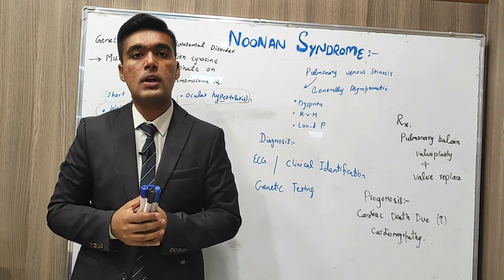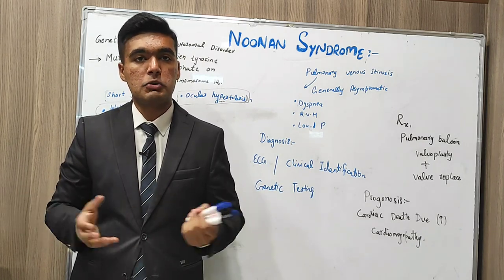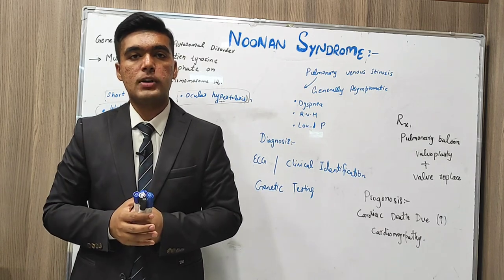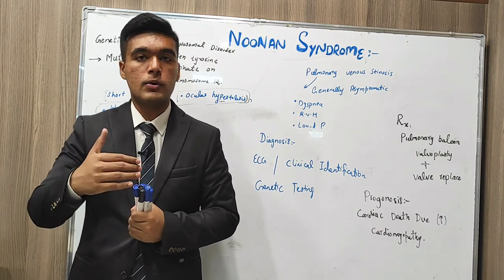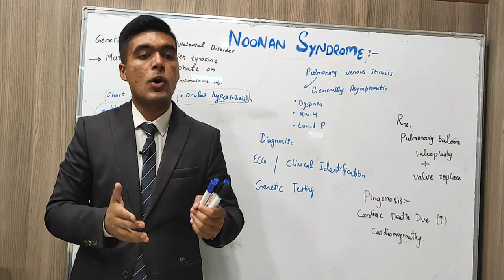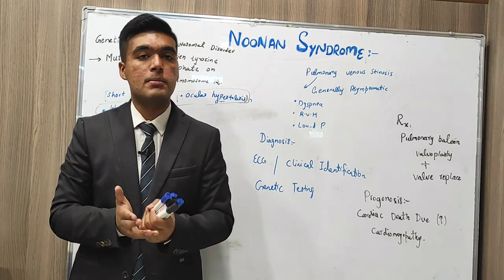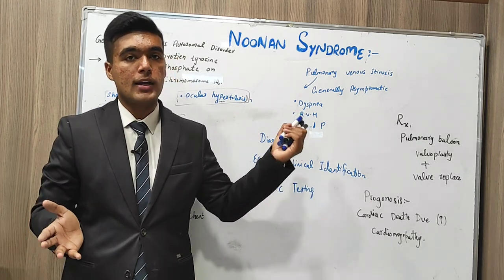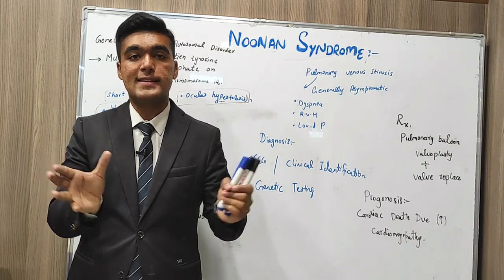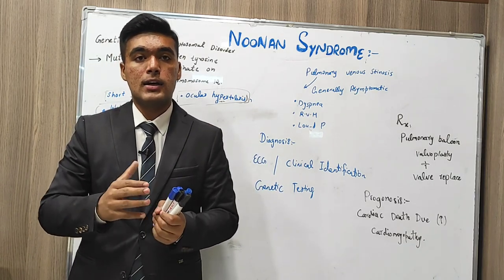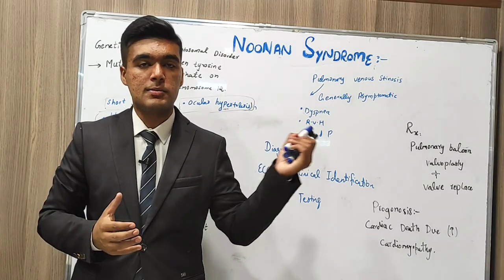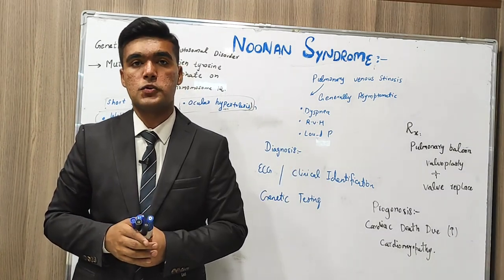So what happens if we have a mutation of that tyrosine phosphatase? The main aim in this topic is we will discuss clinical manifestations — how a patient approaches us and how we can identify that a patient is having Noonan syndrome. We have a few signs and symptoms which basically give us the idea that this particular patient has Noonan syndrome.